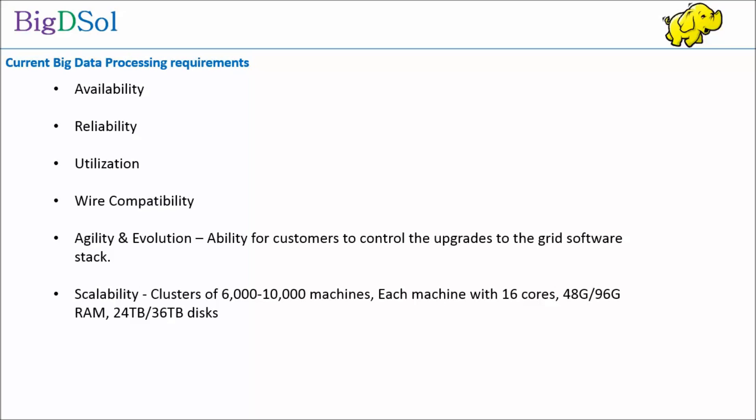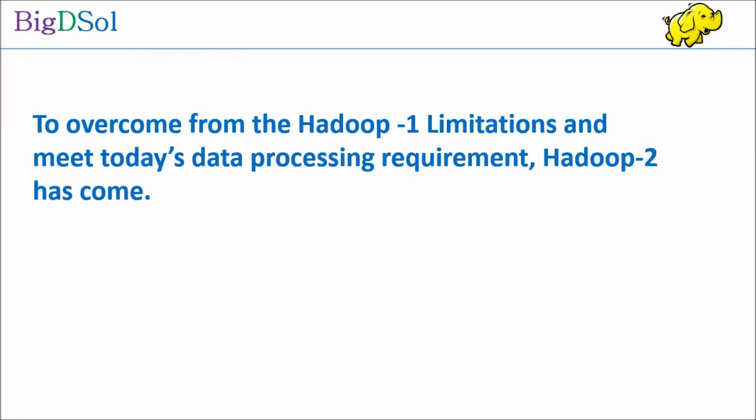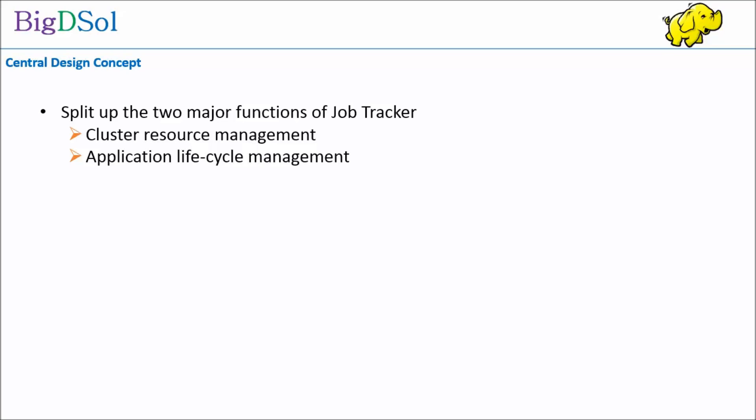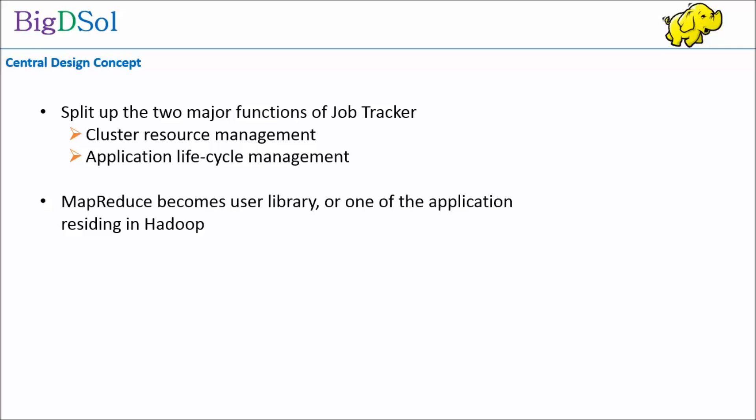The need is for 100,000+ concurrent tasks and 10,000 concurrent jobs. To overcome Hadoop 1 limitations and meet today's data processing requirements, Hadoop 2 has come. It has been built with a few key learnings from the past. The key design concepts are: split up the two major functions of JobTracker — cluster resource management and application lifecycle management — and MapReduce becomes a user library, one of the applications residing in Hadoop.